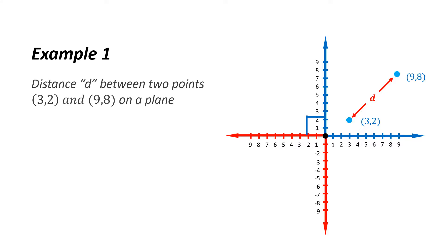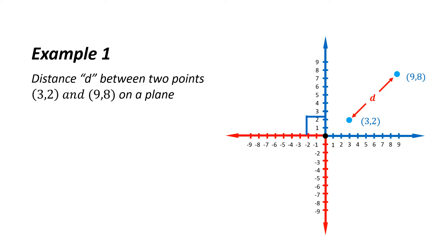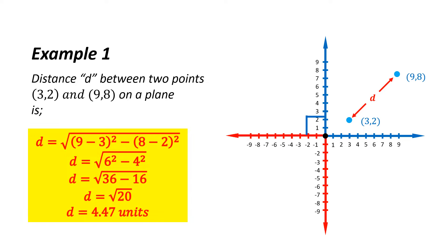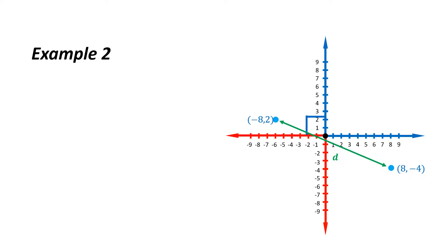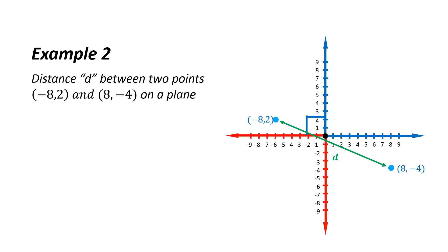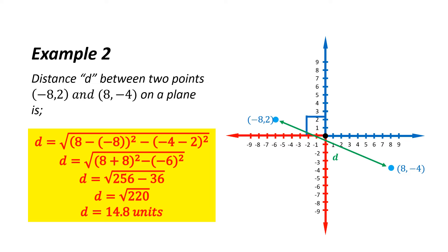Example 1: the distance between points (3, 2) and (9, 8) is d equals the square root of (9 minus 3) squared plus (8 minus 2) squared. After calculation, we get d equal to approximately 8.49 units. Example 2: the distance between points (negative 8, 2) and (8, negative 4) is d equals the square root of (8 minus negative 8) squared plus (negative 4 minus 2) squared, giving d equal to approximately 17.09 units.